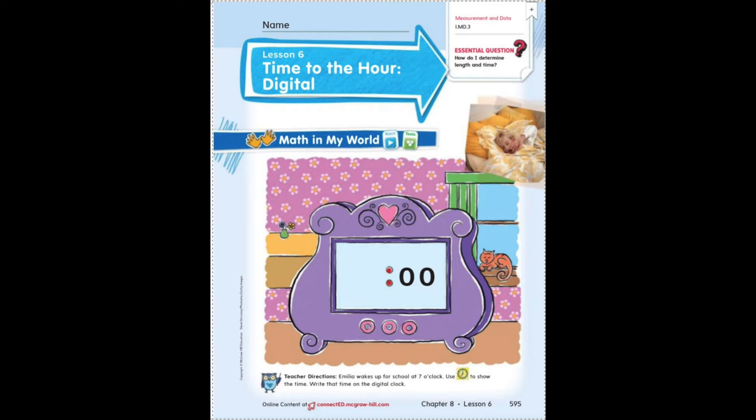As I mentioned in the note today, we are talking about digital time and we are telling time to the hour using digital clocks. At the bottom it says Amelia wakes up for school at seven o'clock. Use the clock to show the time. Write the time on the digital clock.